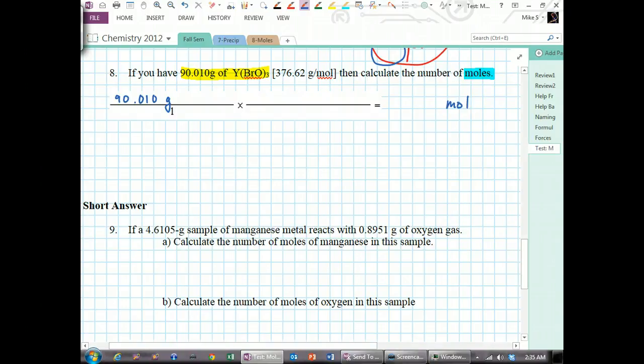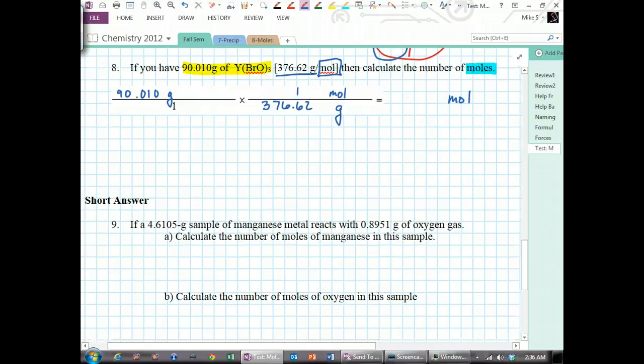We're just going to try and get from grams to moles. The fraction that we use is molar mass, 1 mole per 376.62 grams, so we're going to divide and we get 0.23899 moles of the yttrium hyperbromite.